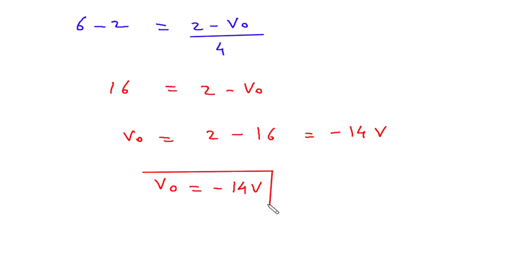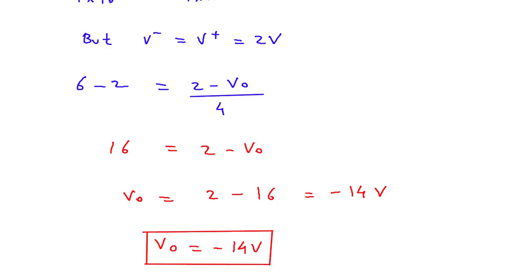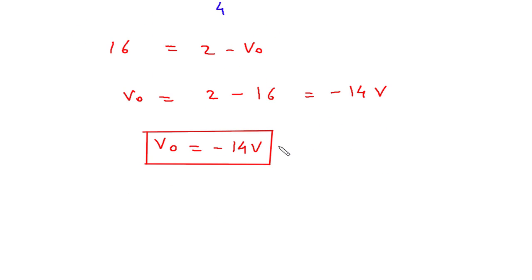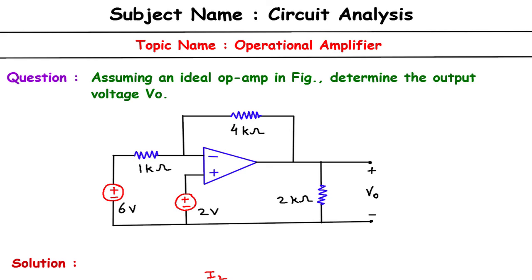What we had to find in this question was the output voltage Vo, and Vo = −14 volts. This is the final answer. If you find this video helpful, feel free to donate whatever amount you can — link is in the description below. Also feel free to like, share, and subscribe to this channel. Thank you.